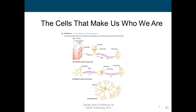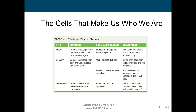Just to recap: motor neurons conduct messages from the brain to the muscles and organs. They're multipolar, found throughout the nervous system, and have an axon with dendrites extending in several directions from the cell body. Sensory neurons carry information from the body and the world to the brain and spinal cord. They're unipolar outside the brain, bipolar outside the brain and spinal cord, and have a few distinctions.